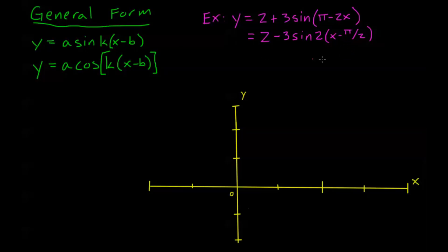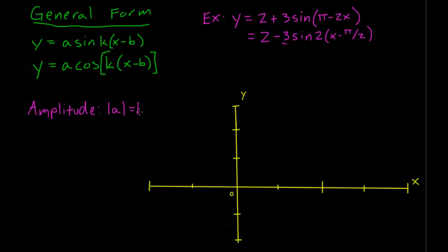Now we can start deriving some of the information. When we graph one period of these functions, the question will usually ask for the whole gambit — find the amplitude, find the period, find the interval of one period, find all of the shifts, etc. So the first thing is to find the amplitude, which is equal to the absolute value of a. Here a is the coefficient of sine — this 2 on the left is a vertical shift, not my a. So the absolute value of negative 3 is positive 3. My amplitude will always be positive.